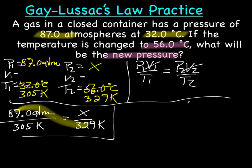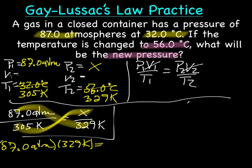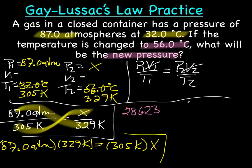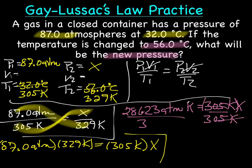So we're going to cross-multiply. Giving us 87.0 atm times 329K equals 305K times X. So now when we multiply, I came up with 28623 atm K equals 305K times X. Get the X by itself, we need to divide both sides by 305K.